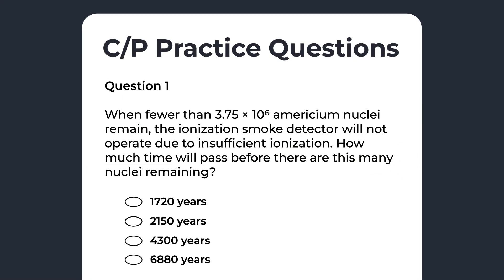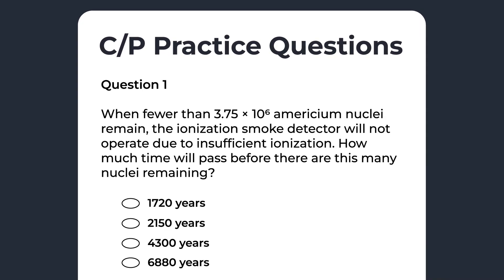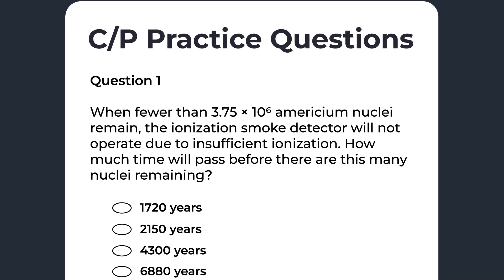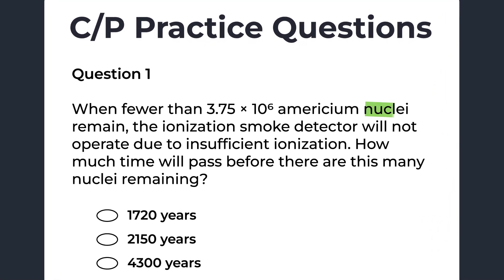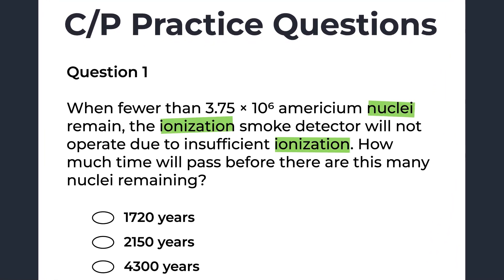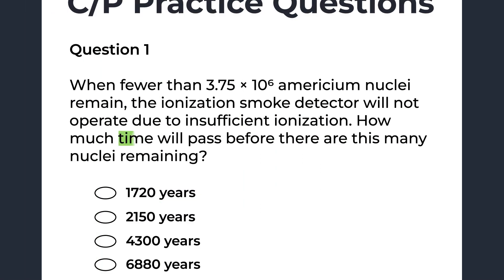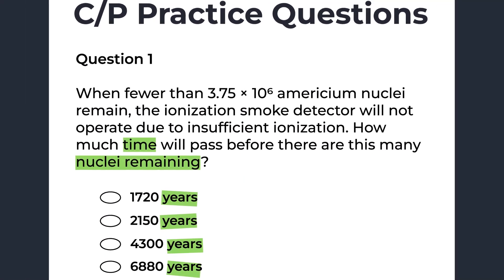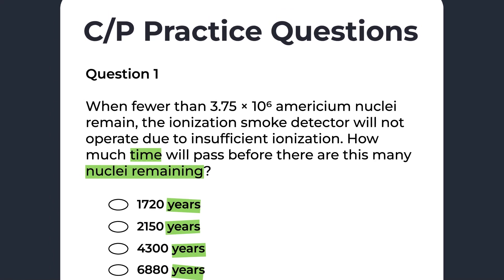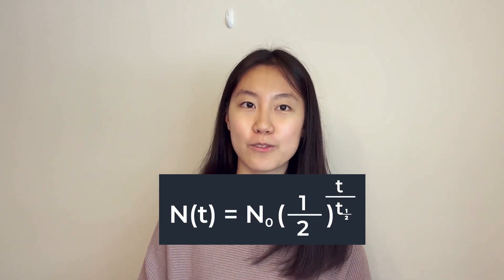Pay close attention to the process I take to solve this question. Let's first think about what subject this question is about. Just taking a brief look, they're talking about chemistry by their mentioning of nuclei and ionization. What exact topic is this question asking about? They're asking us to find a certain amount of time in the unit of years, and they mention remaining nuclei, which implies some nuclei have decayed in the past. What topic in chemistry involves both of these elements? That sounds pretty much like a half-life problem. Once you realize that, you'll have no trouble finding the half-life formula.